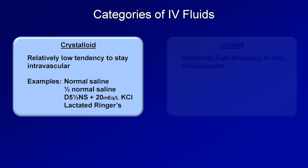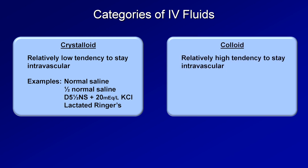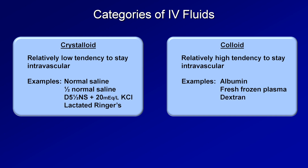The next category is colloid, which has a relatively high tendency to stay intravascular. Examples include solutions of the naturally occurring protein albumin and fresh frozen plasma, which is comprised of plasma proteins extracted from blood donations and typically used to correct coagulopathies. There are also synthetic colloids, which consist of manufactured macromolecules such as dextran and hydroxyethyl starch.